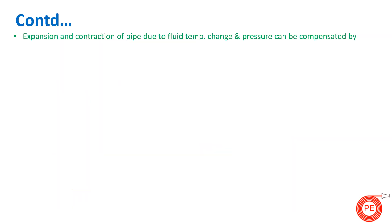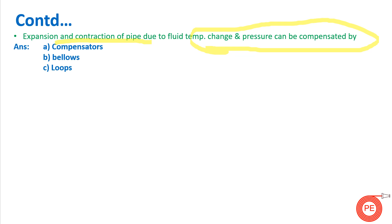Expansion and contraction of pipe due to fluid temperature change and pressure can be compensated by what? If there is a high pressure or high temperature line, expansion and contraction of pipes occurs. This can be compensated by providing compensators, by providing bellows, and by providing expansion loops. These are generally provided so that expansion and contraction can be accommodated and excessive stresses are not generated in the piping.